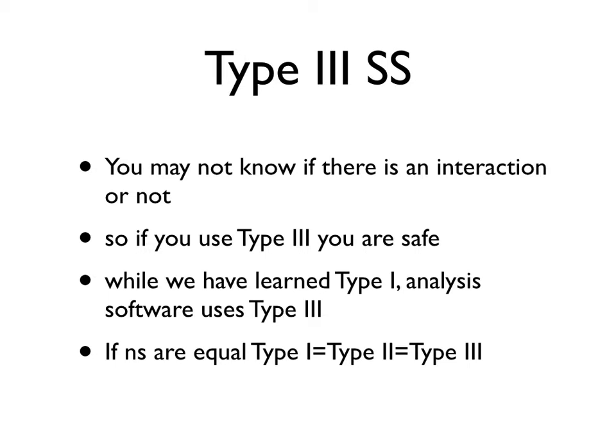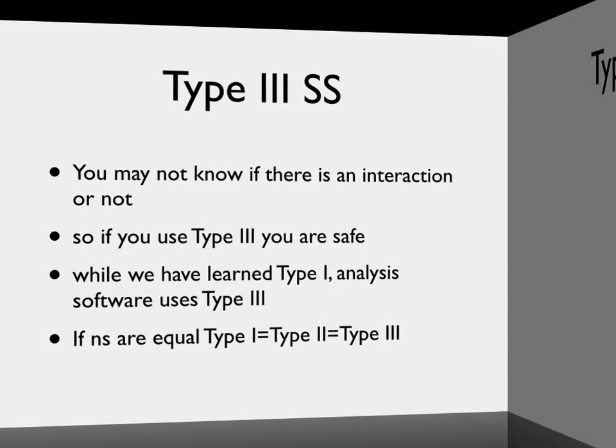So that problem, by the way, with if there's an interaction, depending on where you calculate it, it screws up type 2s. That's only true if there's unequal ns. If there's equal ns, it doesn't matter. Yay! Of course there's a type 4. Of course there's a type 4.